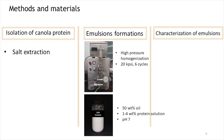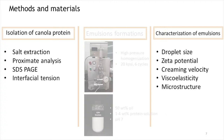The emulsions were composed of 50% canola oil stabilized with 1–4% canola protein at pH 7. The characterization of the protein isolate and the emulsions includes proximal analysis, SDS-PAGE, and interfacial tension of canola protein, as well as droplet size, zeta potential, creaming velocity, viscoelasticity, and microstructure.